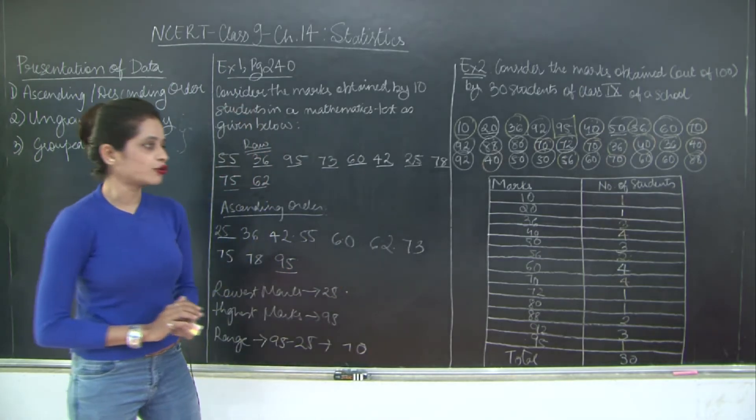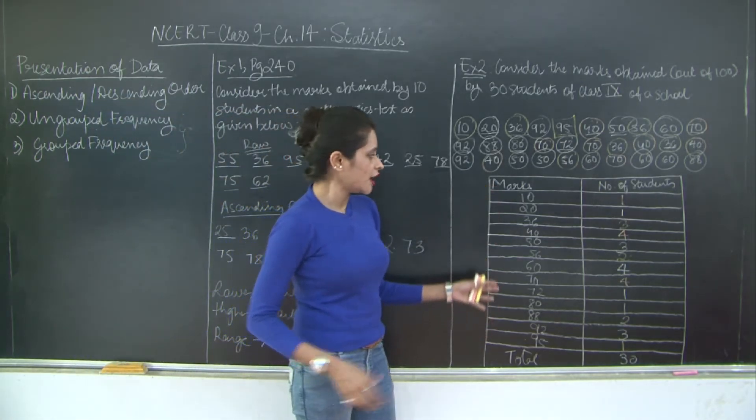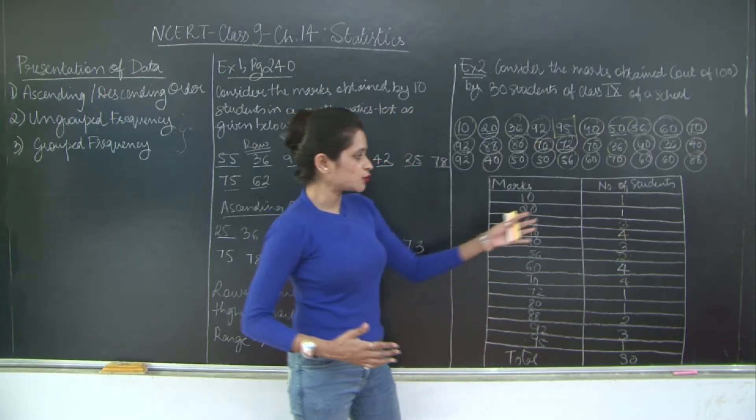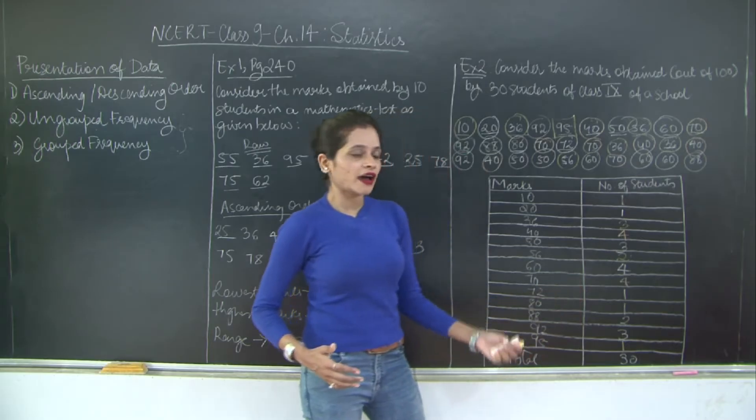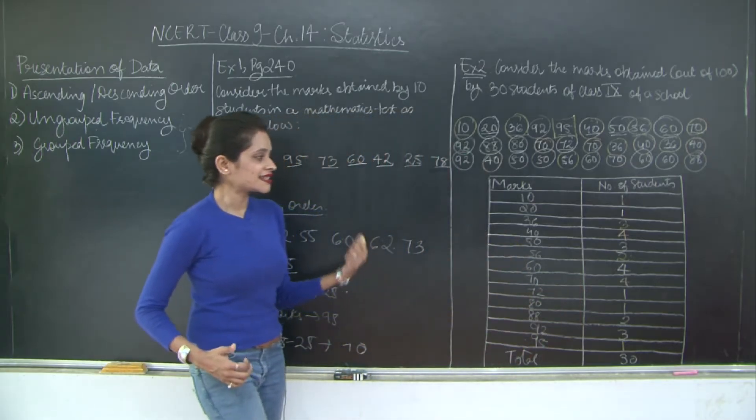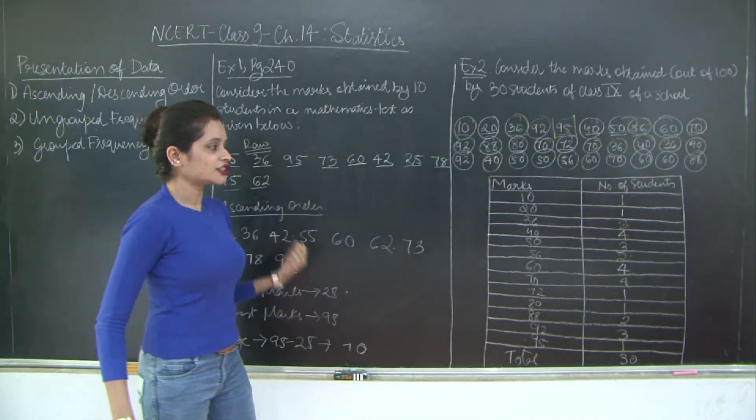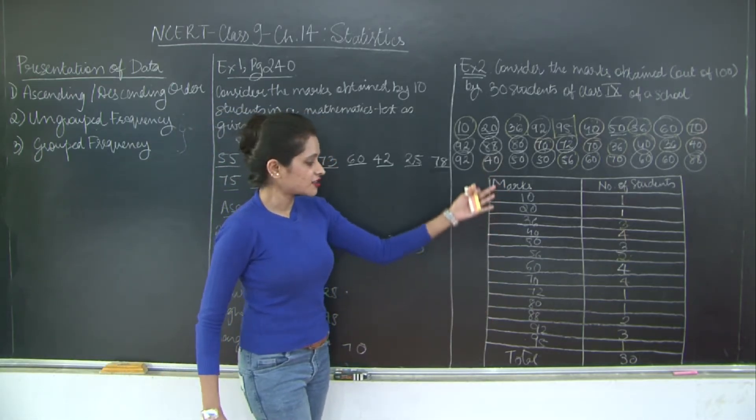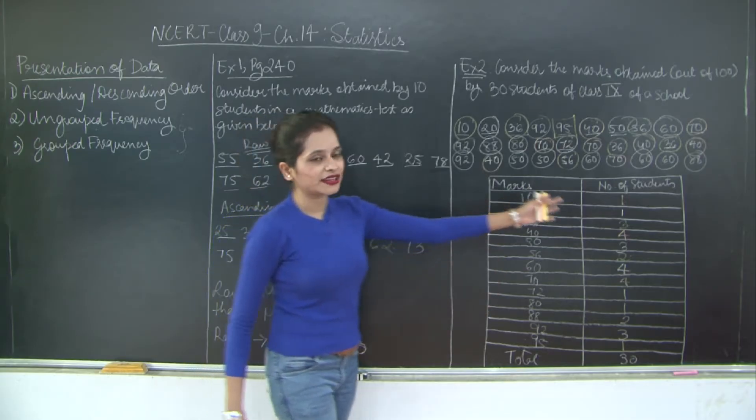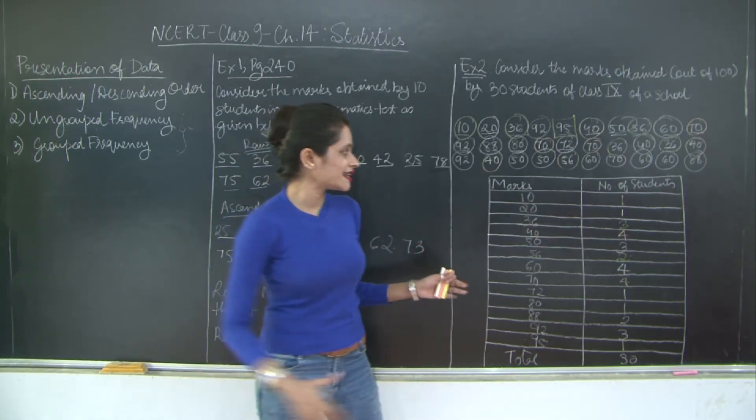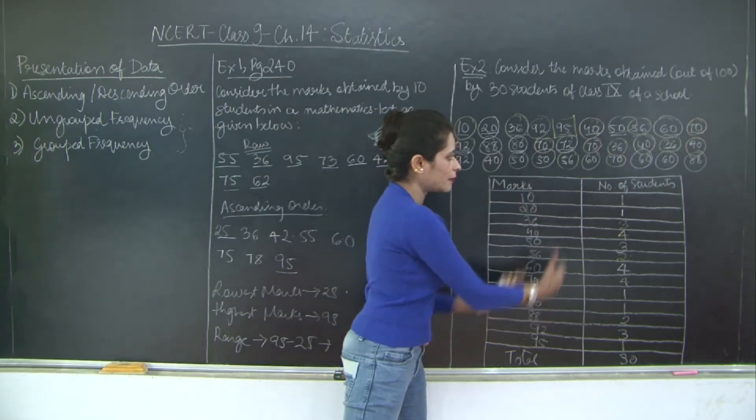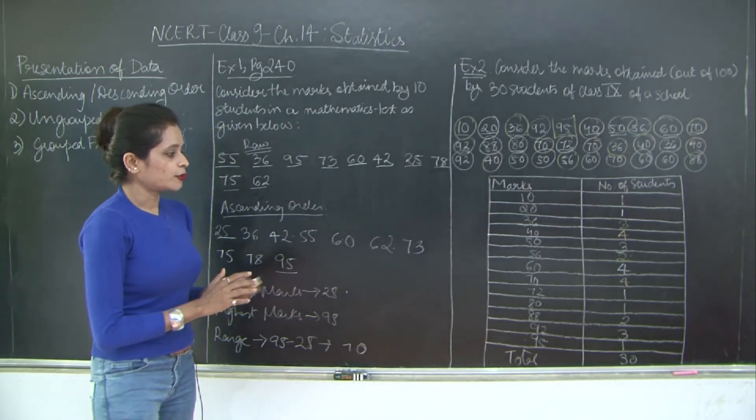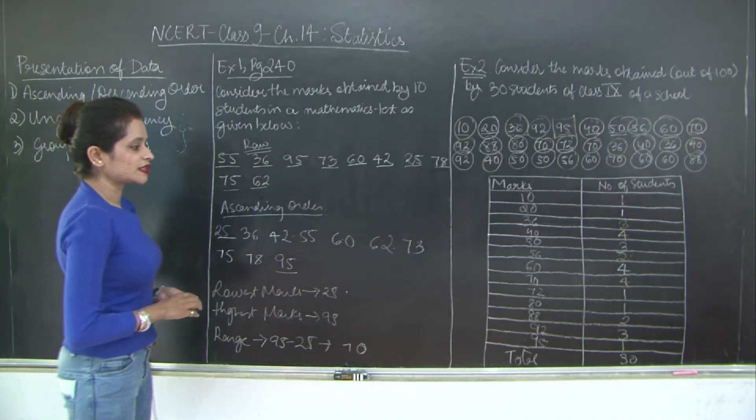So see how we grouped the students. Here we did not group the marks. We have just written the marks individually even for duplicate values. But we have grouped the students on the basis of marks secured by them. This kind of table is known as ungrouped frequency because we are not grouping the marks out here. That is on the basis of which we are grouping the number of students. In grouped frequency, you will see how we are grouping even the marks and the number of students.